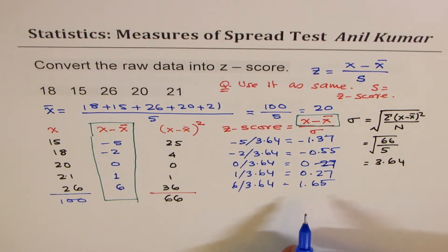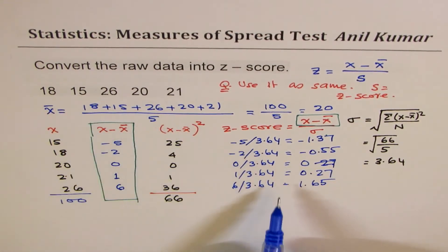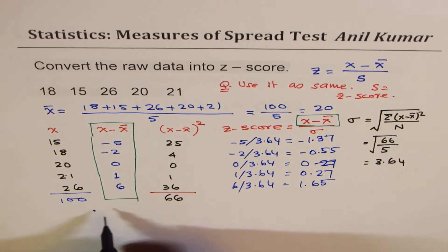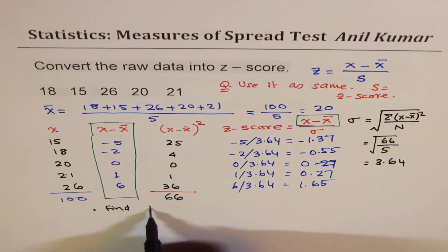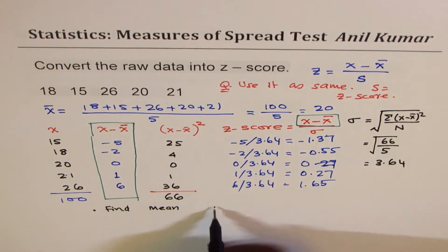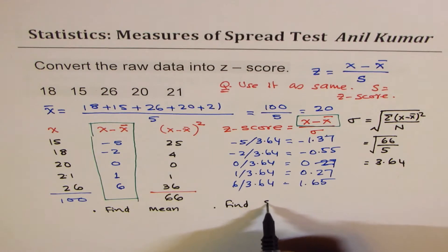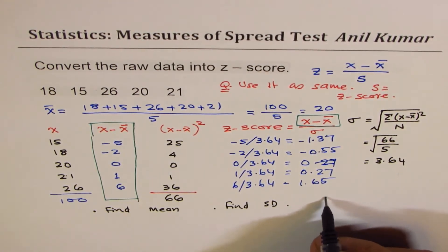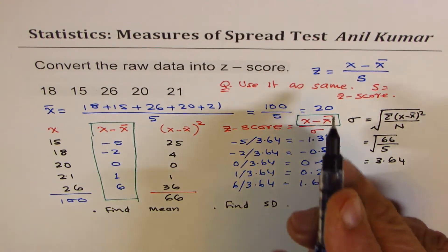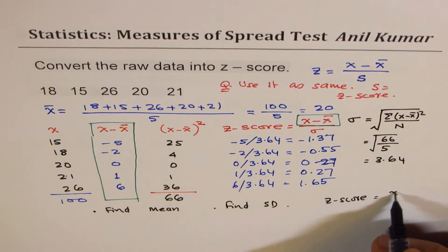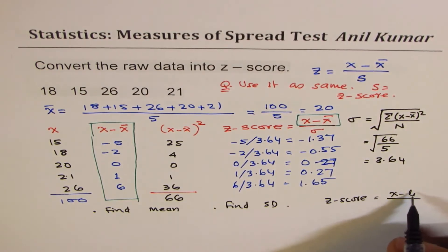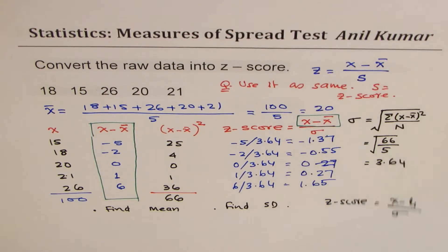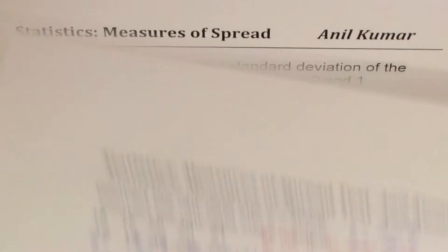So we have calculated the Z-score from the raw data. To summarize, the steps involved are: first, find the mean; second, find the standard deviation; and then apply the formula Z-score equals X minus the population mean divided by the standard deviation.